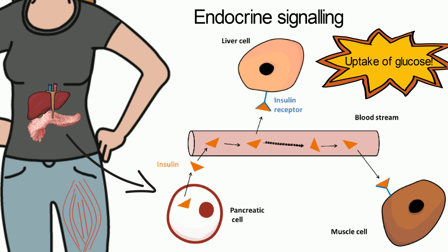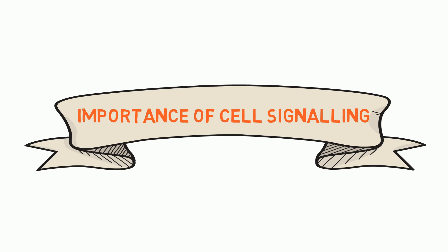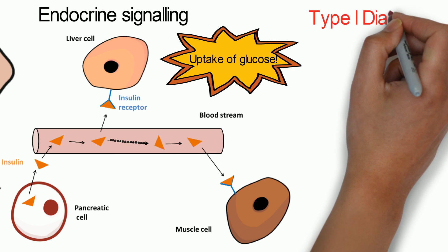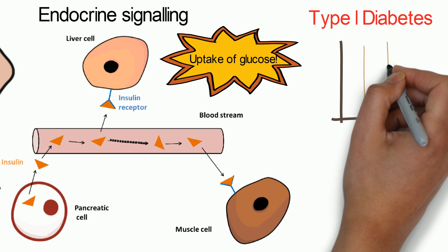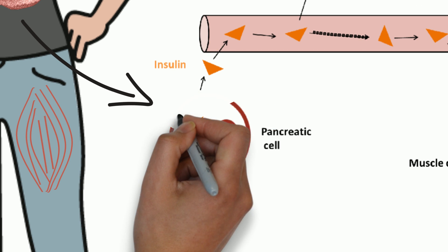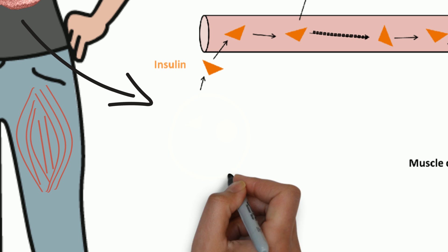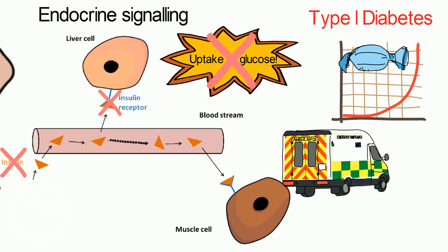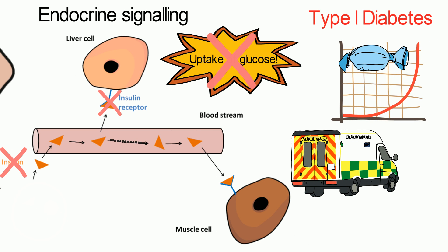We can see the importance of intercellular signaling by looking at type 1 diabetes, which is caused by a breakdown in cell communication that results in dangerously high blood glucose levels. The pancreatic cells that produce insulin are lost, and therefore the insulin signal is also lost. There is no signal to the target cells for the uptake of glucose, and high blood glucose levels in patients may lead to diabetic coma.